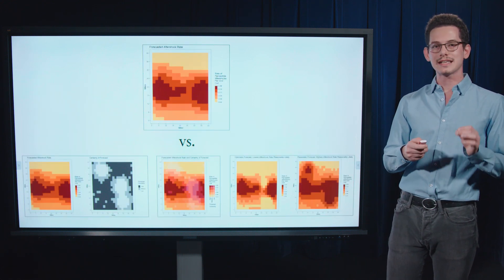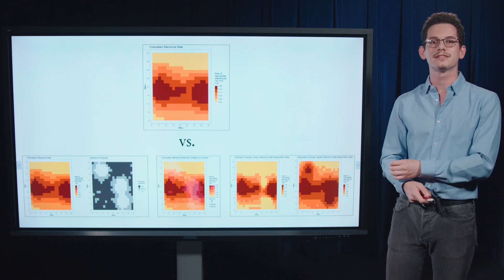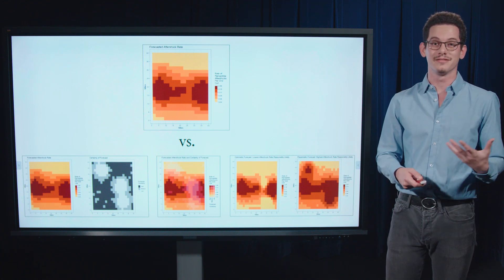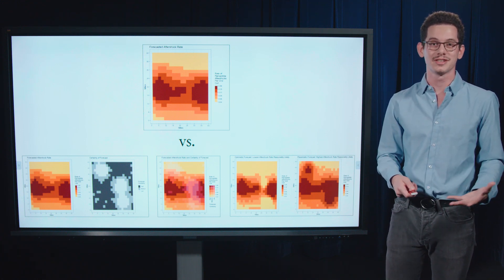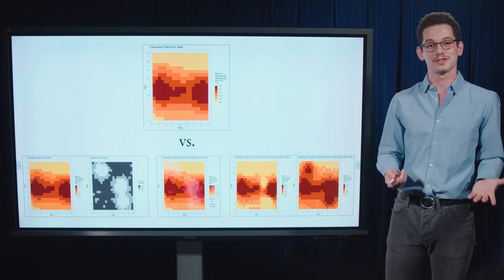And so we're testing each one of these three UVs against the forecast depicted without its uncertainty, because this is what the USGS and other agencies are currently showing aftershock forecasts as—just the forecast, no uncertainty.